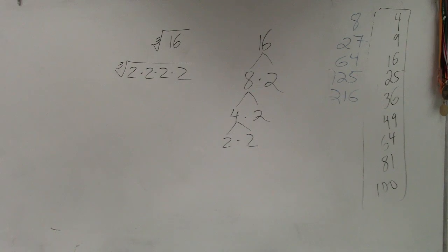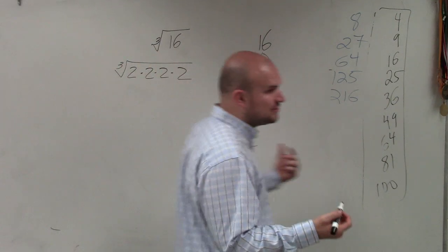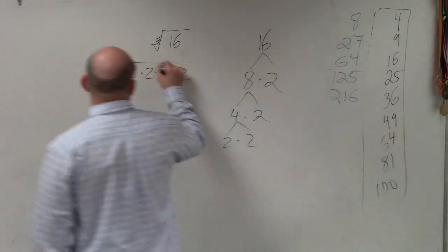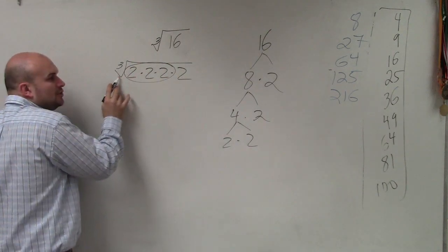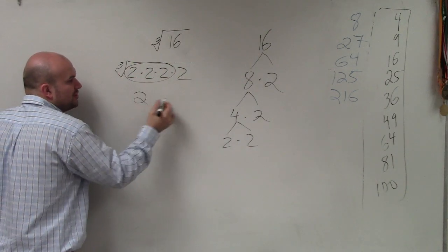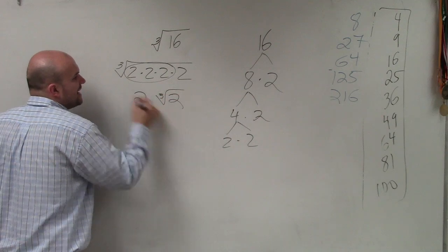So if you take the factor tree and then write your number as a prime factorization, now, to take the cube root, you need to group how many of the 2s? Three. So the cube root of 2 times 2 times 2 is just 2. And then you still have a 2 left under your radical.